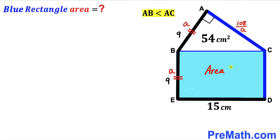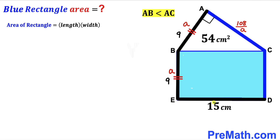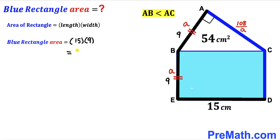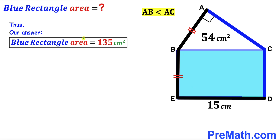For the final step, we calculate the area of the blue shaded rectangle BCDE using area = length × width. The length is 15 centimeter and the width is 9 centimeter, so the area = 15 × 9 = 135 centimeter square. The area of this blue rectangle is 135 centimeter square. Thanks for watching and please don't forget to subscribe to my channel for more exciting videos.